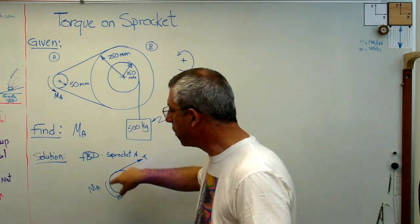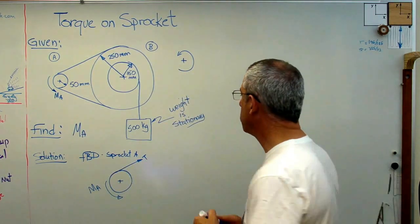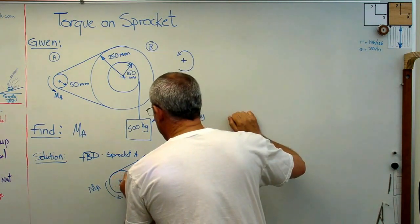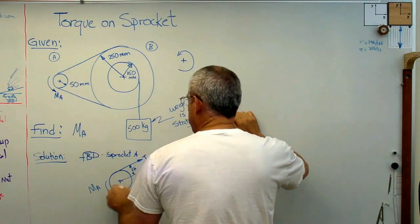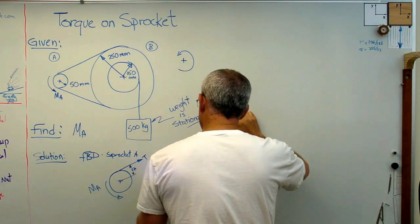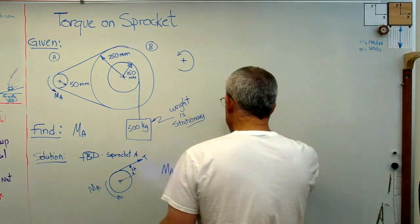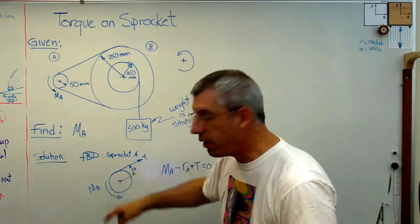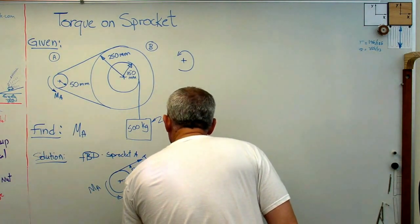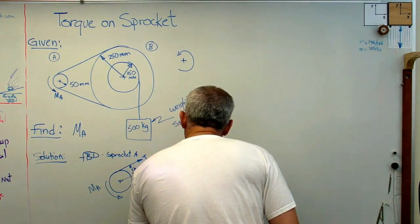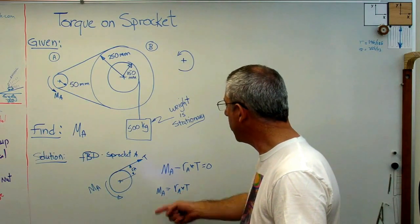What I need to do now is I need to sum the moments about the center of that sprocket there, and I've got to set those moments equal to zero. Well, there's only two. I've got this little radius here that I'll call Ra. So I've got, let's see, that's going to be positive, so Ma is positive, minus Ra times t, and that has to equal zero. So what I've got there, sum of the moments about the center of that sprocket equals zero. That's an equation of equilibrium. If I want to clean this up a little bit, I'll write Ma equals Ra times t. Okay, I've just moved Ma to the other side of the equal sign.